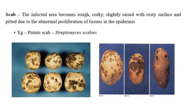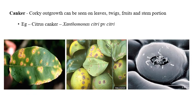The next symptom is scab. Similar symptoms can also be produced by fungi, but there are differences between bacteria, fungi, and viruses. For scab, the infected area becomes rough and corky, slightly raised with a rusty surface. If you touch it with your hand, you can feel the roughness and the slight raising — similar to pustules in wheat stem rust. Abnormal proliferations can also be observed. The example is potato scab, caused by Streptomyces scabies.